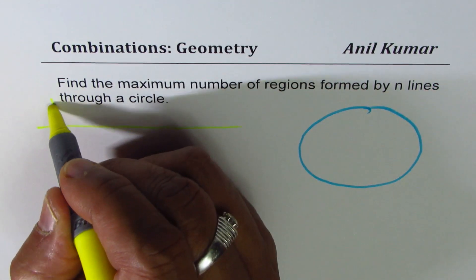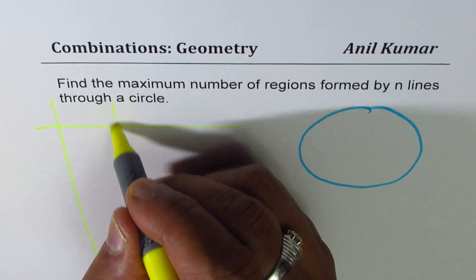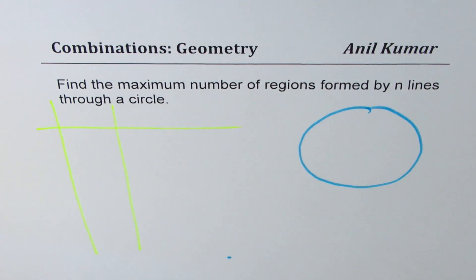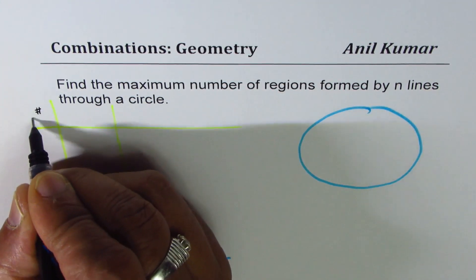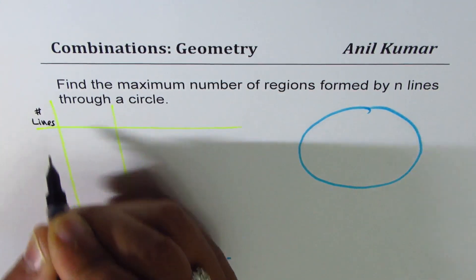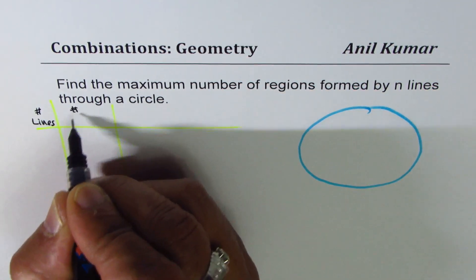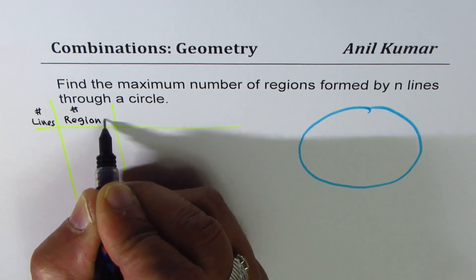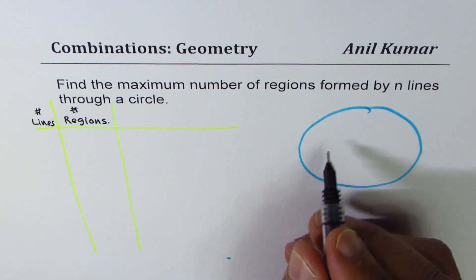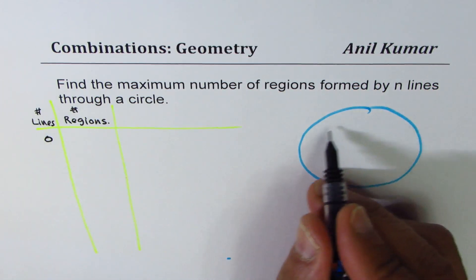What we will do is count the number of regions after drawing a given number of lines. Let this be the number of lines, and then we will count the number of regions. If we don't draw any line — if the number of lines is zero — we have one region.